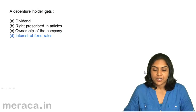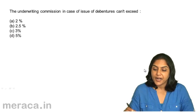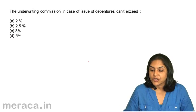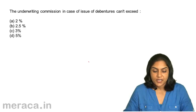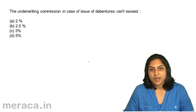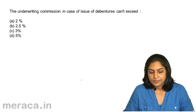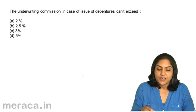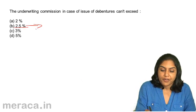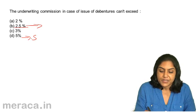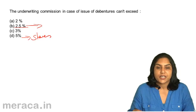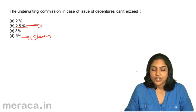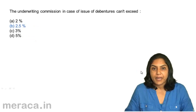Next, underwriting commission in case of issue of debentures cannot exceed: A. 2%, B. 2.5%, C. 3%, D. 5%. Correct answer is B — 2.5%. It is 5% in case of shares, but for debentures it is 2.5%. So, the correct answer is B.